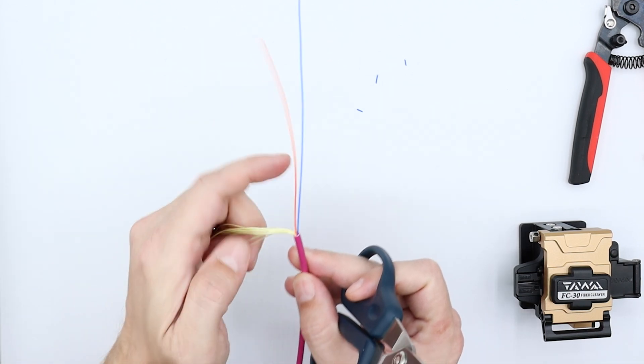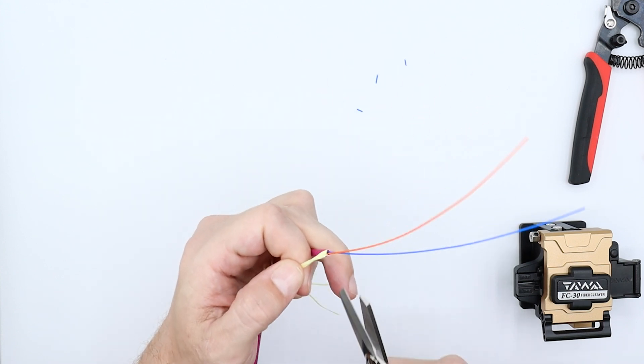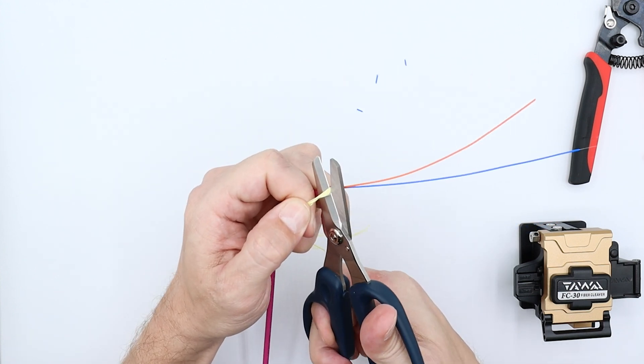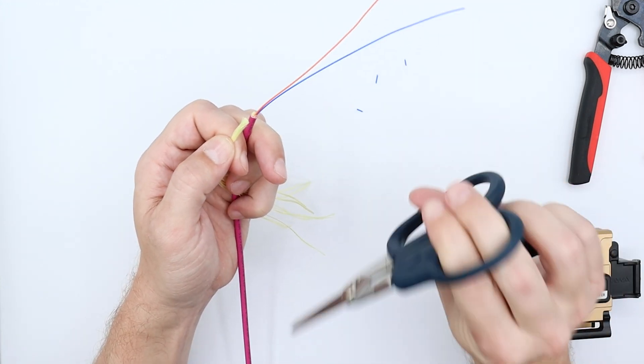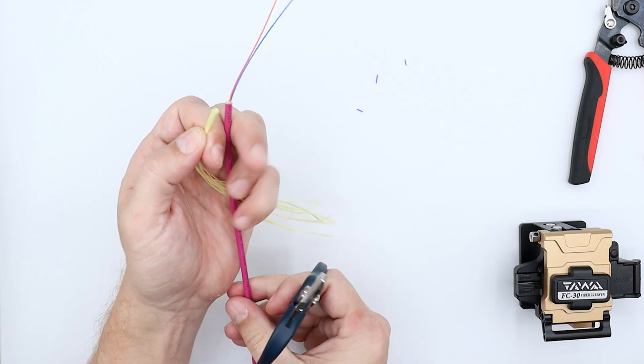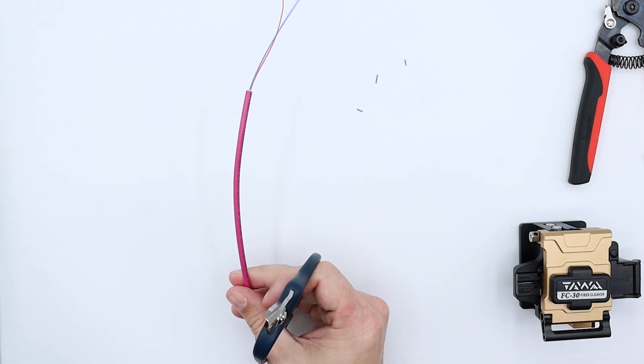If you want to at this point, you can cut off your aramid yarn to get that out of the way. These are the Kevlar cutters used to do that, so we'll cut that off and we'll just set that aside.